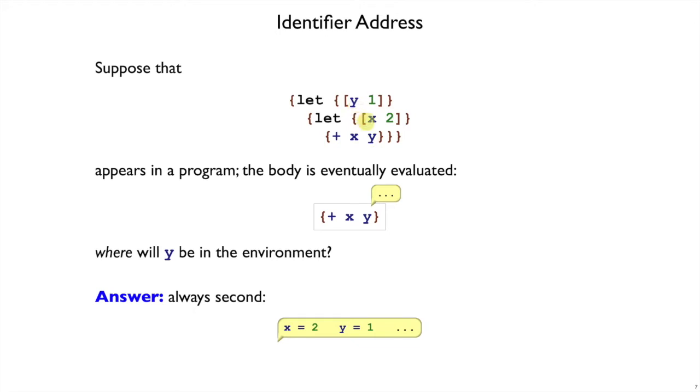And that again is because when this let adds x to 2, it's adding to the environment that is the body for this let where y was just added to 1. So the environment was built up backwards, y equals 1 was added, and then x equals 2 was added. And again, we know that without knowing anything about the surrounding program that might add other things into the environment.